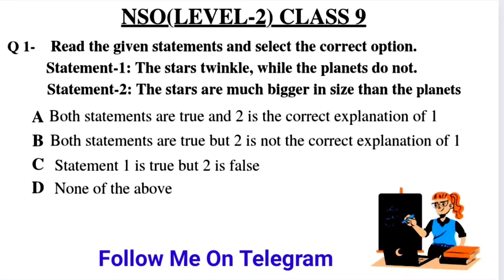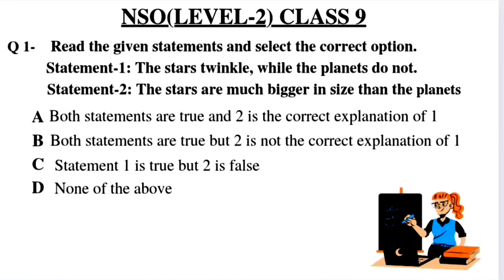Question number 1: Read the given statements and select the correct option. Statement one: the stars twinkle while the planets do not. Statement two: the stars are much bigger in size than the planets. Option A: both statements are true and two is the correct explanation of one. Option B: both statements are true but two is not the correct explanation of one. Option C: statement one is true but two is false. Option D: none of the above.